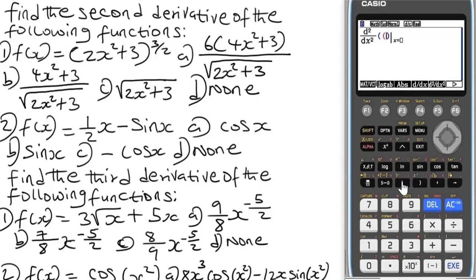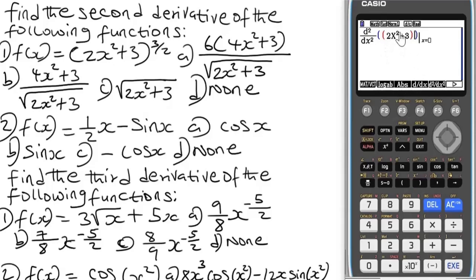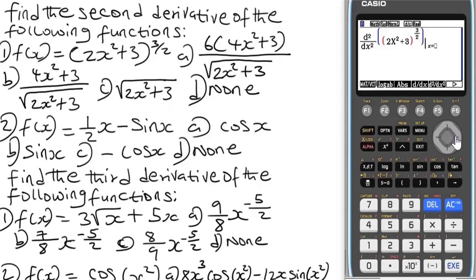Start with brackets — we have 2x², so press Alpha, the plus button, then x². Note that the bracket must be balanced. We have two brackets on the left and two brackets on the right, so the bracket is balanced. Then input the power as a fraction: 3 over 2. Input the stored value of 2 and press EXE.